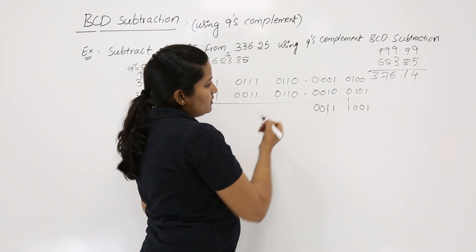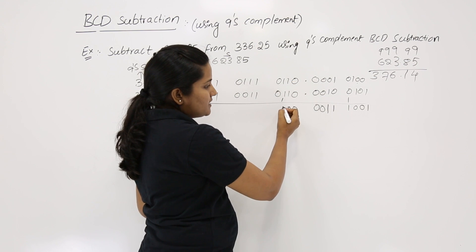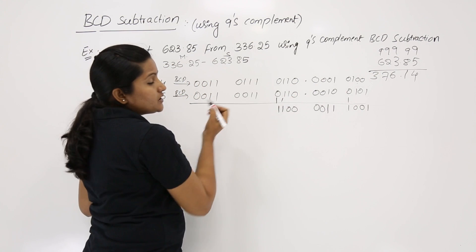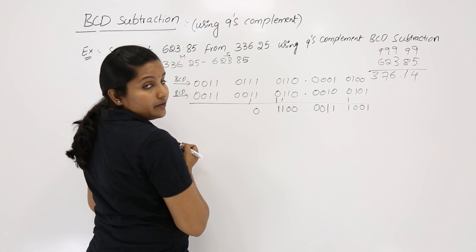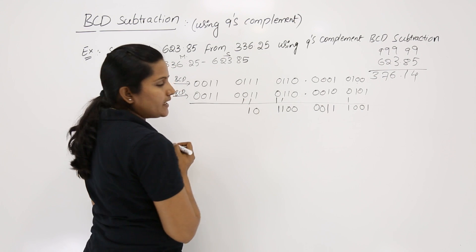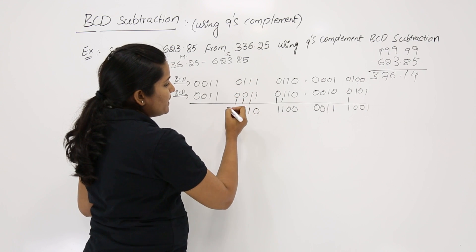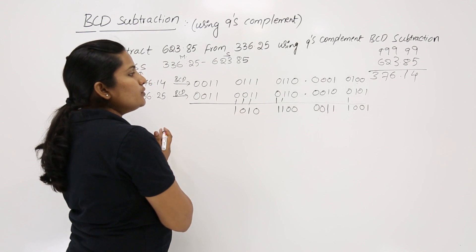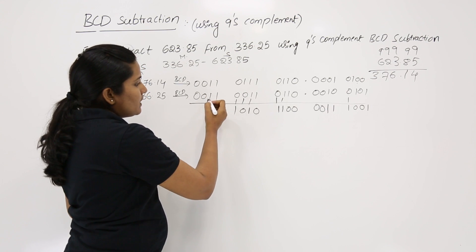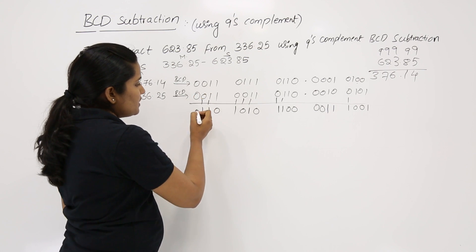Continuing the BCD addition for the remaining digit groups, propagating carries where needed. In the integer part, adding the corresponding BCD digits with carry propagation gives partial results for each group. For simplification in gate exams, you can directly see: this group is equivalent to 4+5=9 (BCD for 9), and this group gives 1+2=3 (BCD for 3).